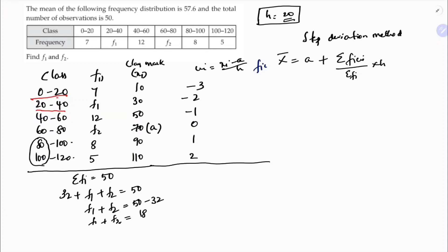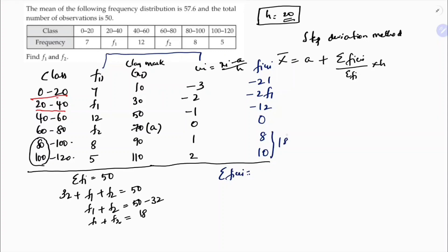Now calculating f·ui: 7 × (-3) = -21, f1 × (-2) = -2f1, 12 × (-1) = -12, f2 × 0 = 0, 8 × 1 = 8, 5 × 2 = 10. Positive values sum to 18, negative values sum to -33. So Σf·ui = 18 - 33 - 2f1 = -15 - 2f1.